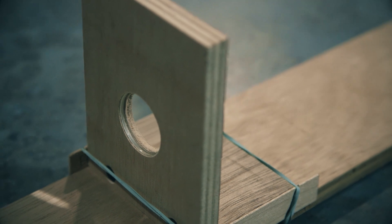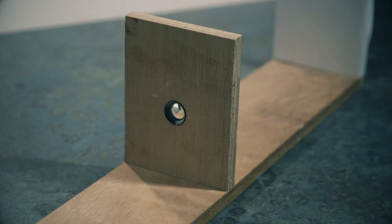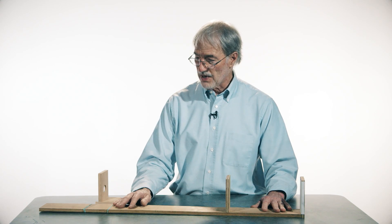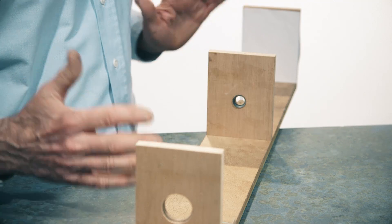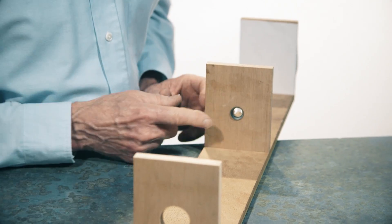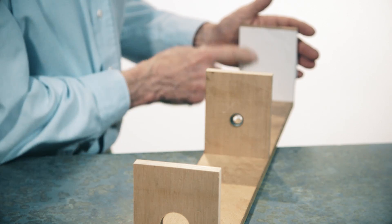So our projection device is really a simple crude telephoto lens. This rail is what supports everything. This is the main lens on a focuser. This is the Barlow lens on a standard and this is the screen.